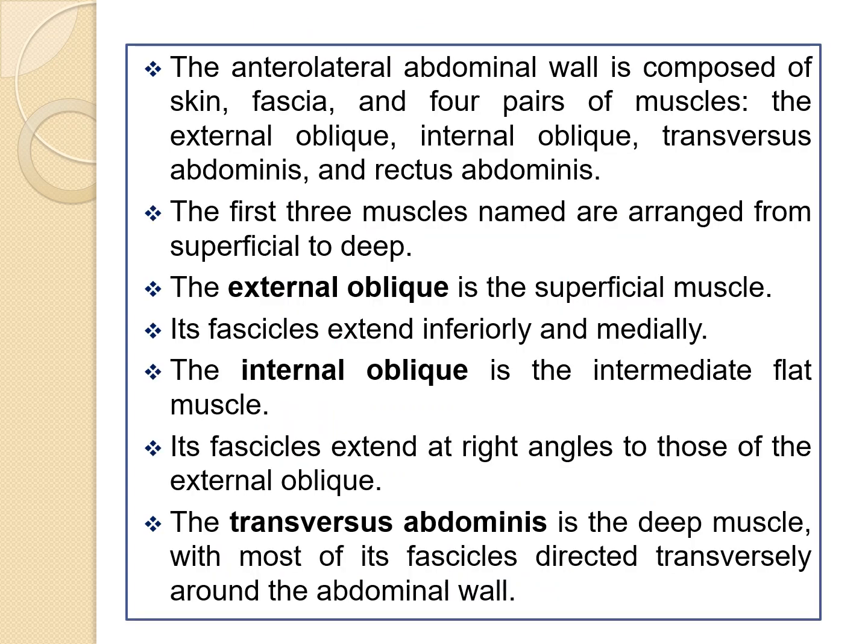The anterior lateral abdominal wall is composed of skin, fascia and four pairs of muscles: the external oblique, internal oblique, transverse abdominis and rectus abdominis. The first three muscles are arranged from superficial to deep — external oblique is the superficial muscle, internal oblique is intermediate, and transverse abdominis is the deep muscle.